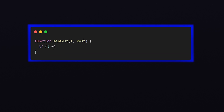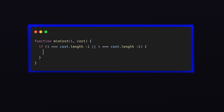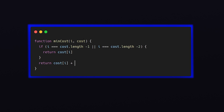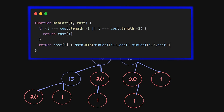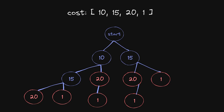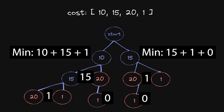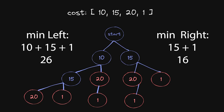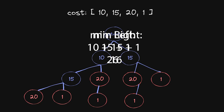To put that into code, we can use recursion. We'll recursively explore the two options of one step or two steps until we reach a point where we can exit the staircase, which we can see in the red colored nodes. Once we hit the bottom, we keep getting the minimum going up layer by layer until we hit the very top, where we call get the minimum of both options from the first step — and that will be our final answer.